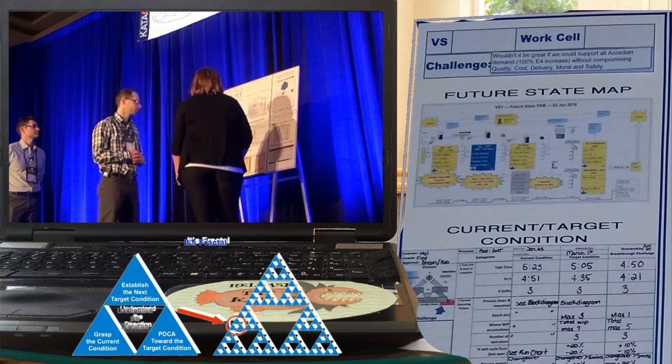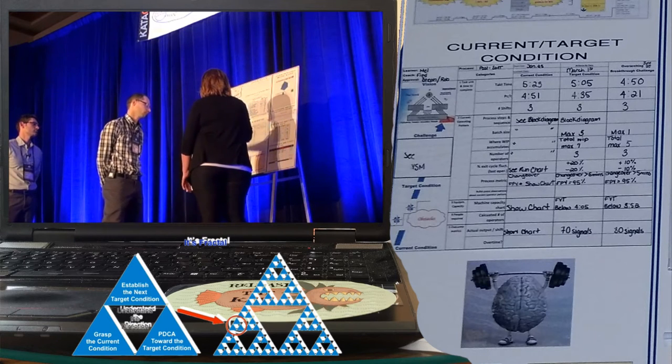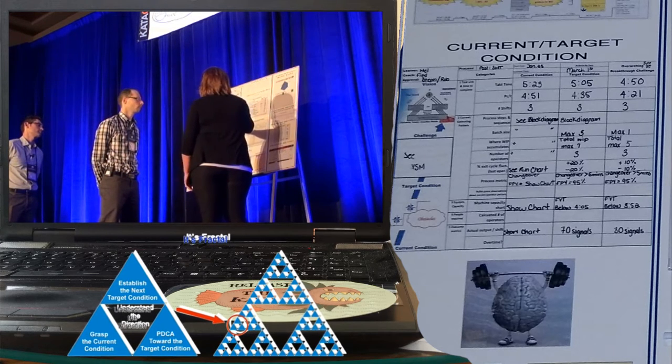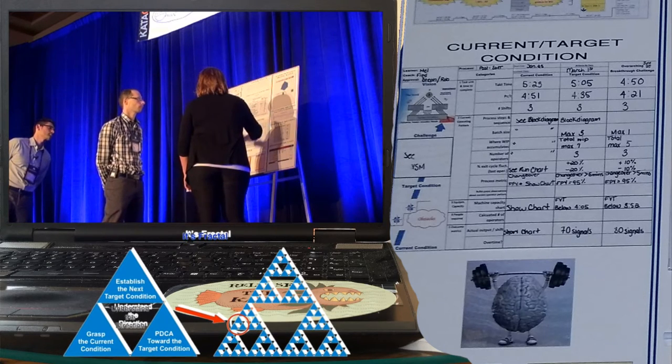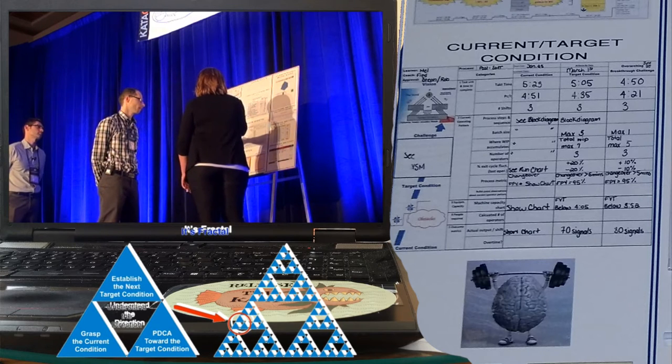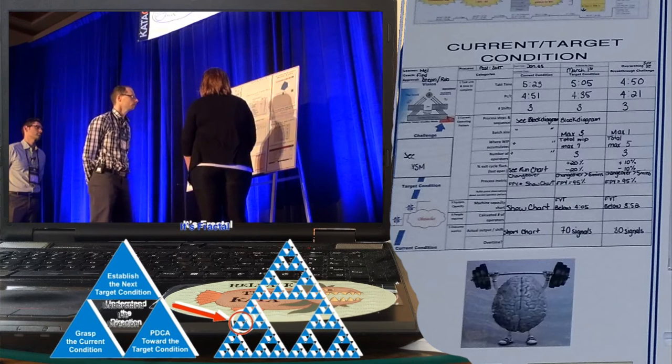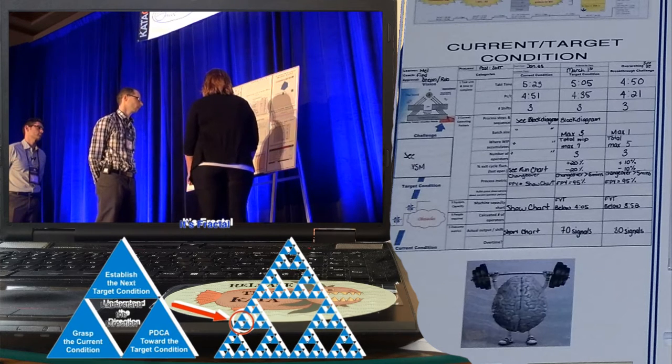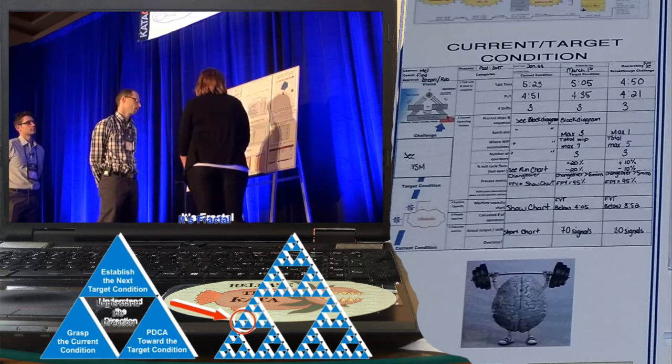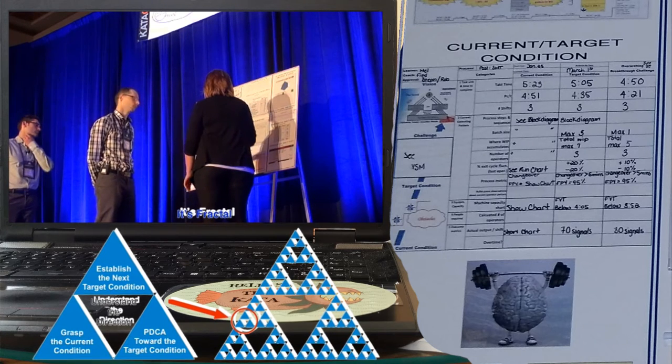And what is our target condition? So our target condition is in the cell, we want our takt timer set at 5 minutes and 5 seconds, which in turn will give us the plan cycle time of 4 minutes and 35 seconds. We want to run on three shifts. Our process steps and sequence in the cell, we have push line, wave, hand soldering, d-panel, press fit, test, and mechanical. We want a batch size of three, max. We want a total WIP max of seven. We want to have three operators in the cell. We want the last operator exit cycle fluctuation to be plus 20%, minus 20%. We want to have our changeovers, a target of five minutes, and our first pass yield, a target of 95% or greater. We want our FVT, which is our test stations, to be below four minutes and five seconds. And we want to have an actual output in the cell of 70 signals per shift.